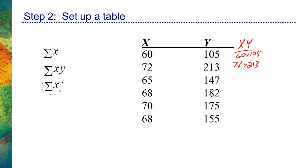For the equation (sigma x) squared, I ask from step one: sum up what? I'm simply being asked to sum up x — I already have a column for x, I don't need to add anything. After I find that sum, I'll square it. For sigma x squared, I'm asked to sum up squared x values. I don't have a column of squared x values, so let's add that: 60 squared, 72 squared, 65 squared, and so forth. Once I find all those squares, the equation is asking me to sum them all up.